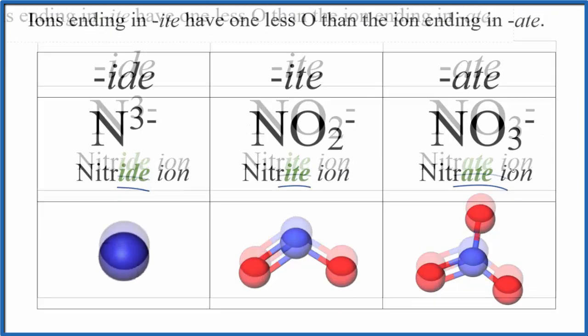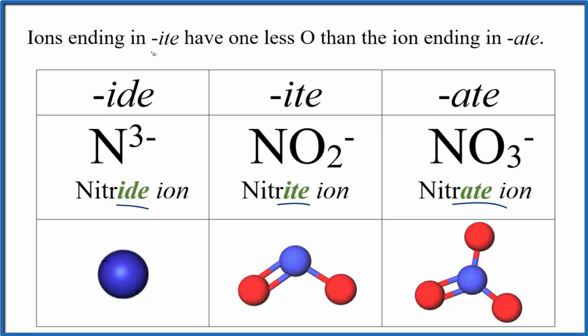And then this rule here, that when we have ite, ite is one less oxygen than ate. So we have NO3-, that's nitrate. Ite's going to be one less. So instead of NO3-, we just have NO2-, and this works for all polyatomic ions.